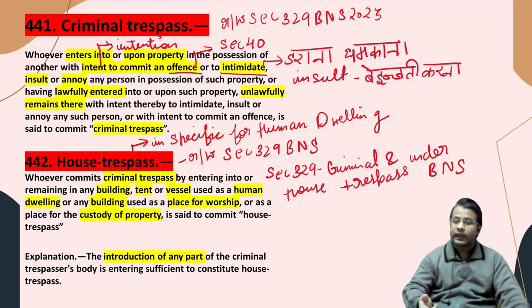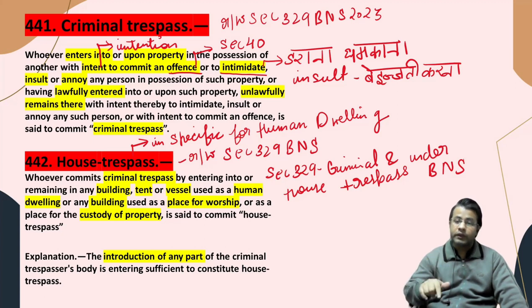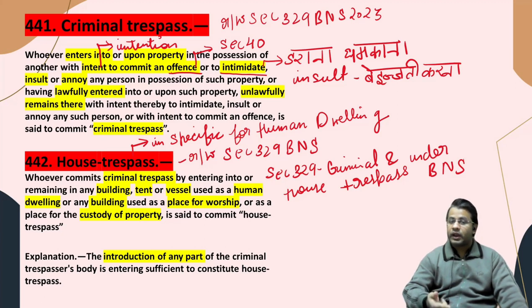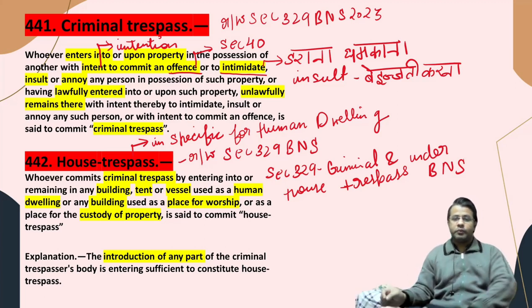फिर दूसरा जो है — कि इसको intimidate करेंगे, insult करेंगे, annoy करेंगे, या फिर किसी तरह का offence करेंगे — तो यहाँ पर criminal trespass हो जाएगा। यह हो गया criminal trespass का definition। In a simple language, इसको हम Section 329 Bharatiya Nyaya Sanhita 2023 के साथ read करेंगे। यह हो गया 441, अब आते हैं 442 पर।